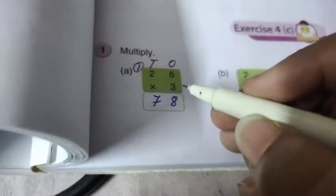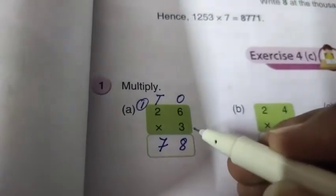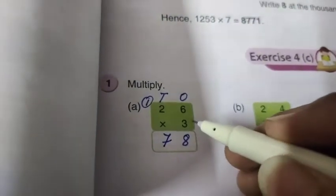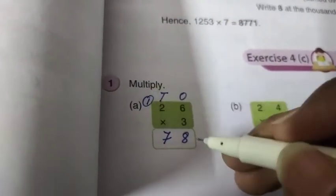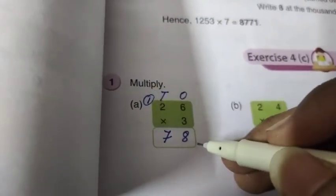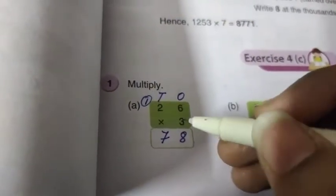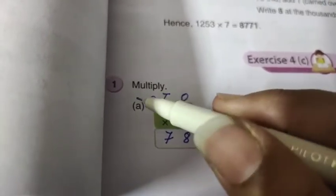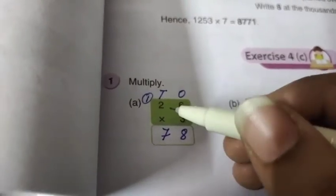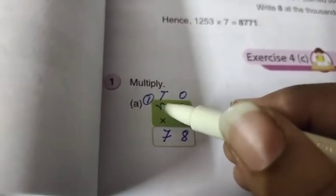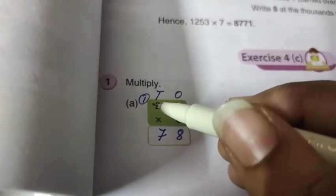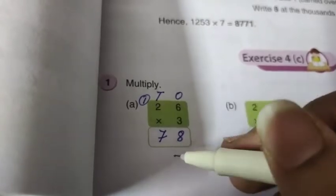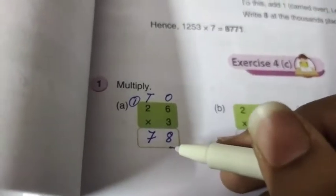I hope children you have understood. Please see properly. 3 6's are 18 — write 1 and 8. Then 3 2's are 6, carry 1, gives 7. So 78 is your answer.